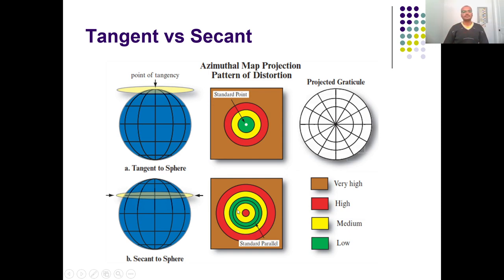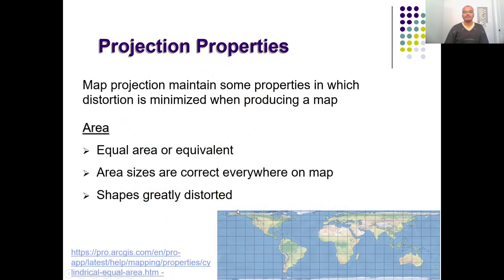Based on the developable surface, we broadly divide projection systems into cylindrical, conical, and planar, and then further into normal, transverse, and oblique, and further into tangent and secant. Likewise, we have at least 18 broad types of map projection systems. Map projections are named in terms of the property they maintain, because each projection maintains some properties accurately and distorts others. Some projection systems distort all properties and accordingly have different names.